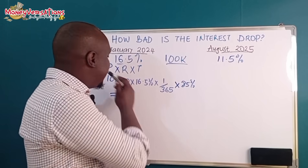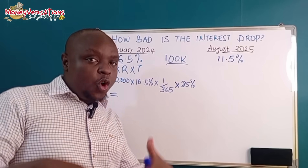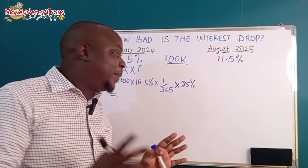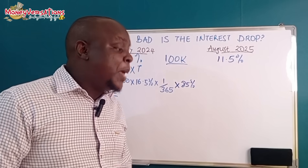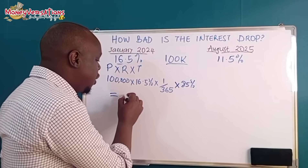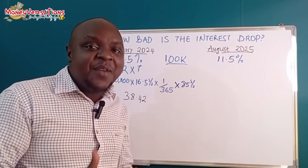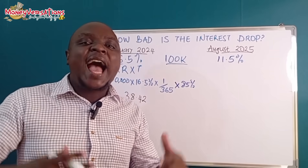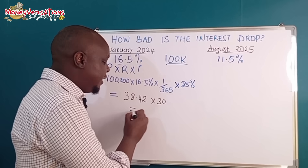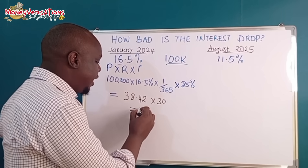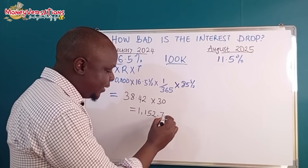To clarify: because we are deducting 15 percent withholding tax, what will be left from the original 100 percent is 85 percent. When I punched these figures into the calculator, what I got is 38.42 as your net daily interest. Then, to get the average monthly return, we take that figure and multiply it by 30 days. The answer I got is 1,152.739.